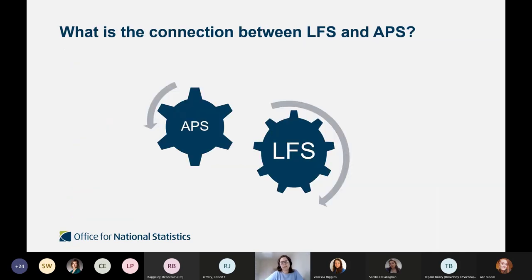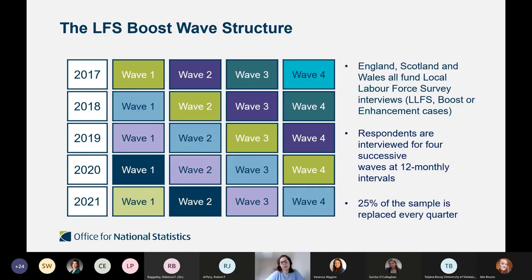What is the connection between the two surveys? These are not two standalone surveys — they're connected. Part of the Labour Force Survey is used in the Annual Population Survey. So the APS is basically made up of part of the LFS as well as the LFS boost, and this depicts the wave structure of the boost.